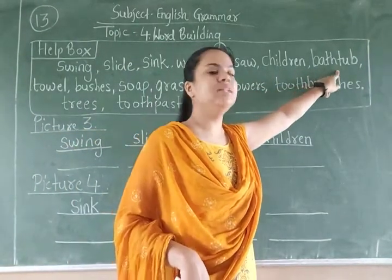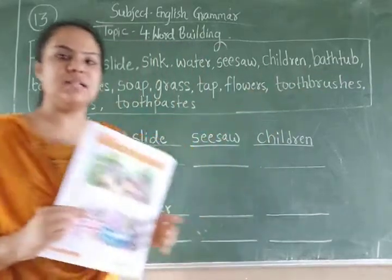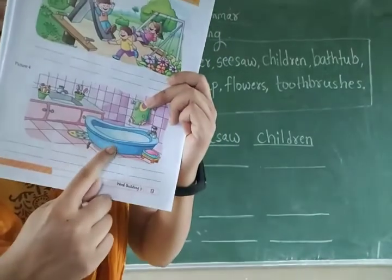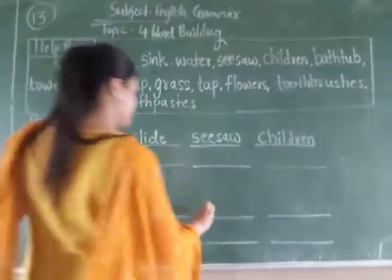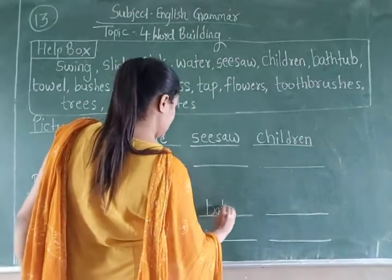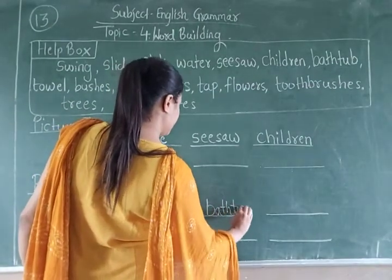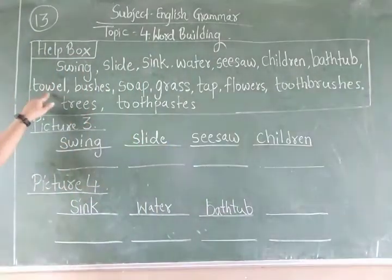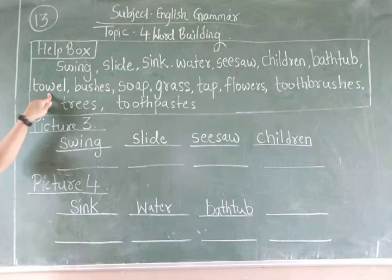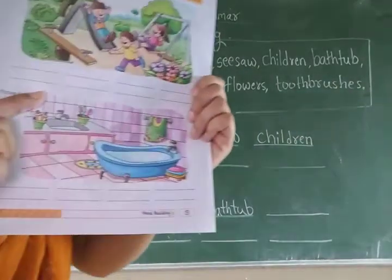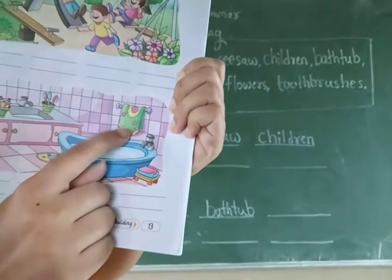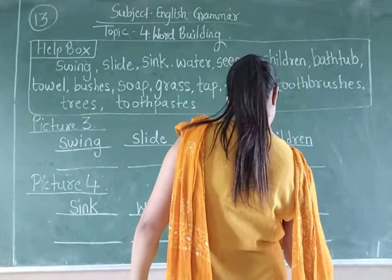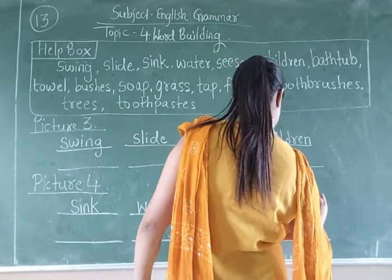After that: B-A-T-H-T-U-B — bathtub. Bathtub means jahan nahate hain. You can see this is the bathtub. Write here in picture number 4: B-A-T-H-T-U-B, bathtub. After that: T-O-W-E-L — towel. I can see the towel here. Write down in picture number 4: T-O-W-E-L, towel.